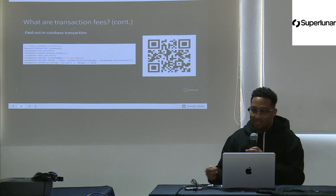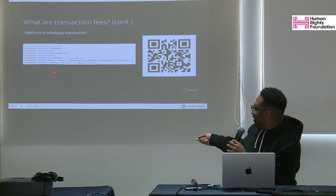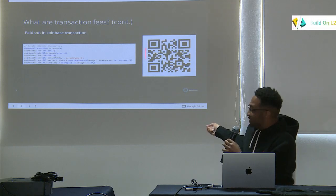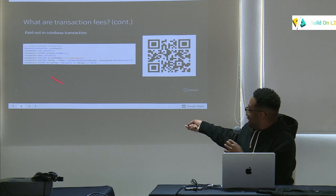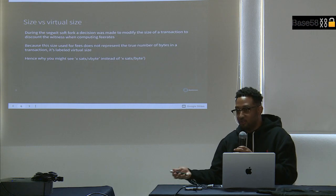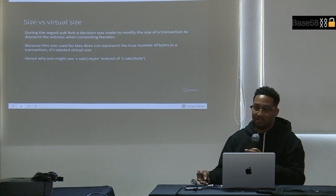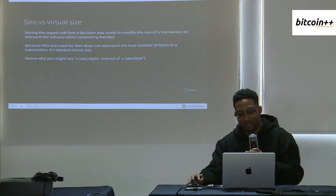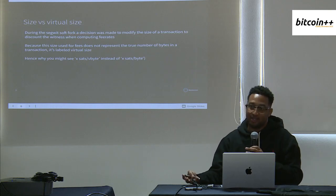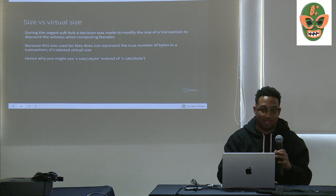Some more context: fees are actually paid out in the Coinbase transaction. I've added QR codes throughout the slides — you can scan them to link to the relevant source code, which is in the Bitcoin Core source code. Regarding size versus virtual size: during the SegWit soft fork, a decision was made to modify the size of a transaction to discount the witness when computing fee rates. Because the size used for fees doesn't represent the true number of bytes, it's called the virtual size, which is why you see sats per vbyte instead of sats per byte.